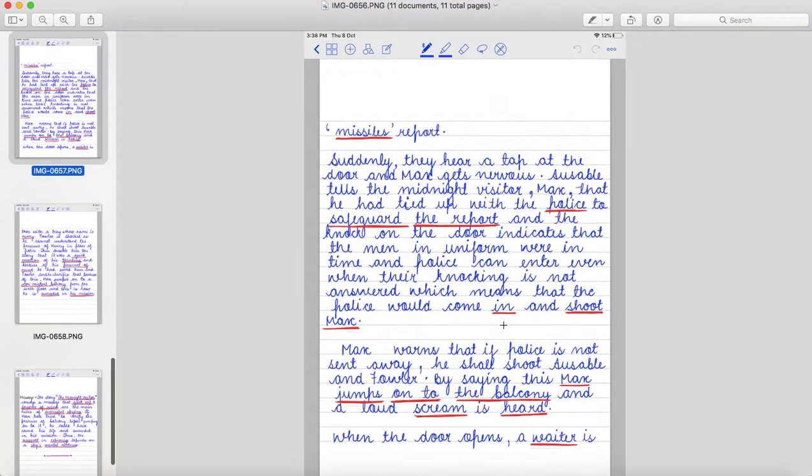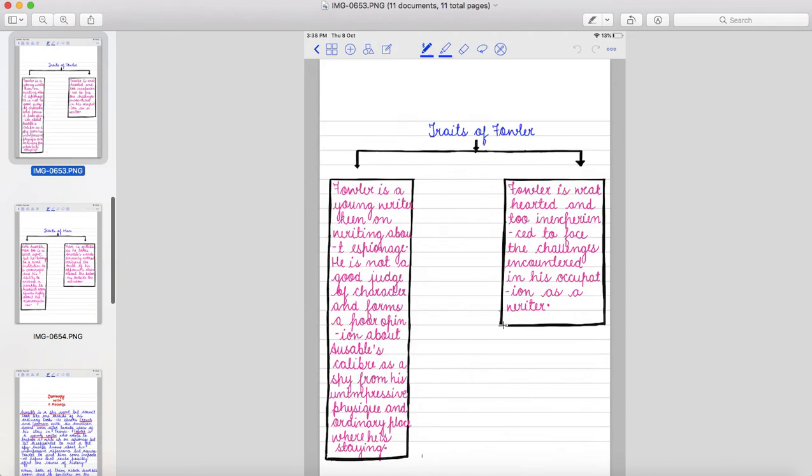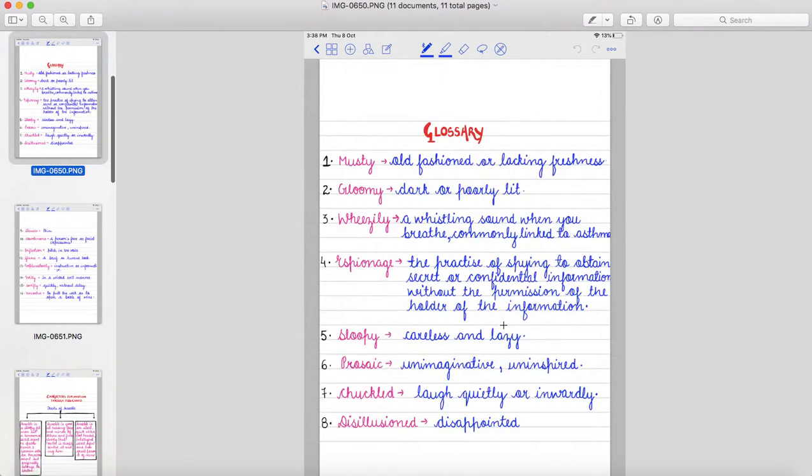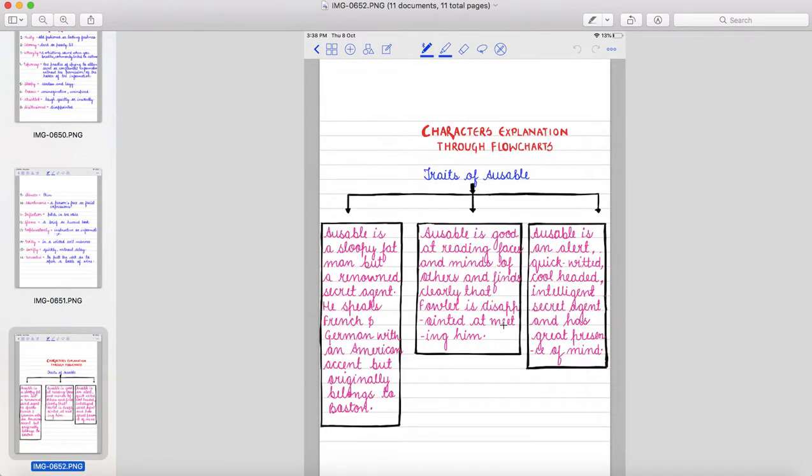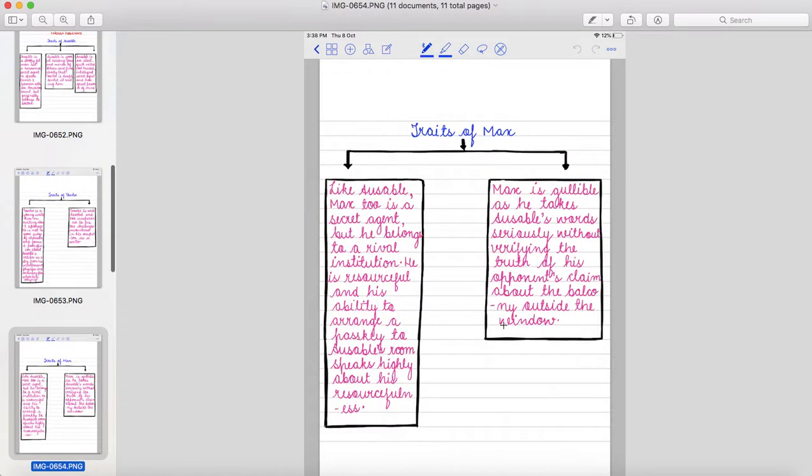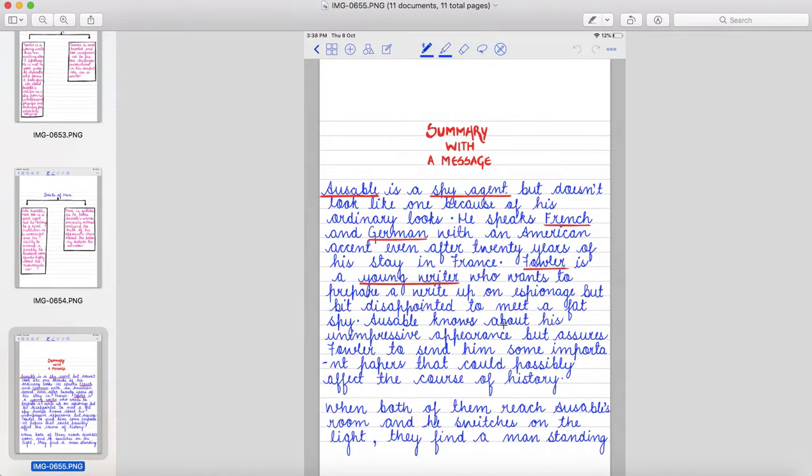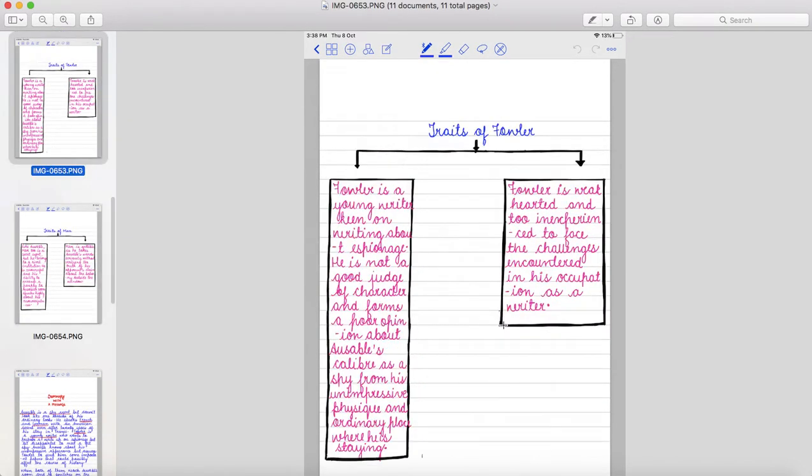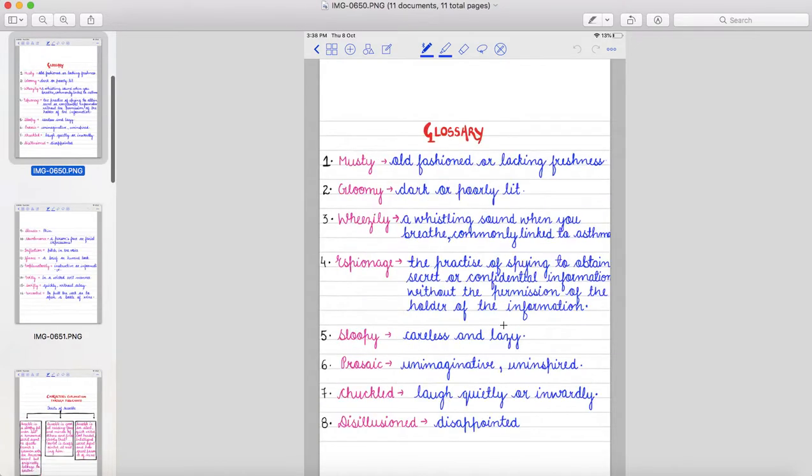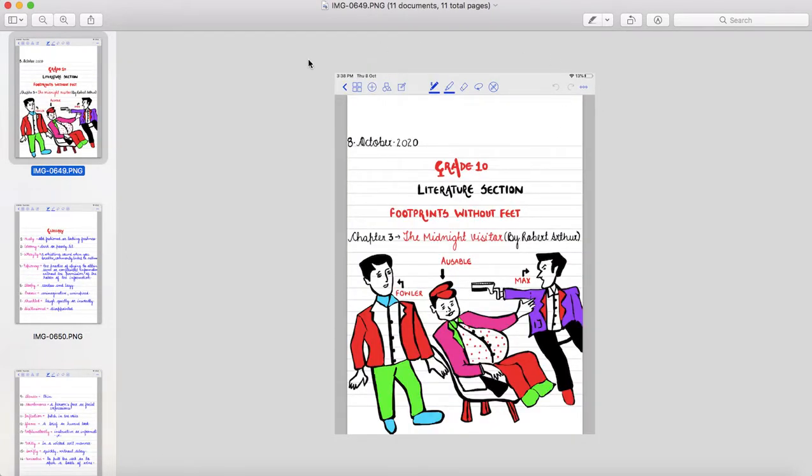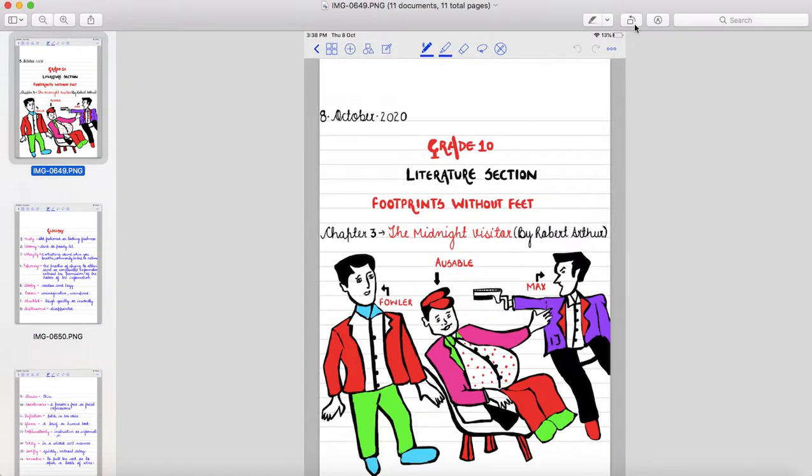And the message which we receive from the story. The story is The Midnight Visitor conveys a message that quick wit and presence of mind are the main rules of successful spying. If Max had tried to verify the presence of balcony before jumping onto it, he could have saved his life and succeeded in his mission. Thus, the survival in espionage depends on a spy's mental alertness. Right? So students, I hope this video has given you absolute clarity and you can copy the glossary, the traits of Ausable, Fowler and Max and summary with a message in your notepads and notebook. So keep liking and sharing my videos and don't forget to subscribe my channel that is impactful learning with Nupur. Thank you so much.